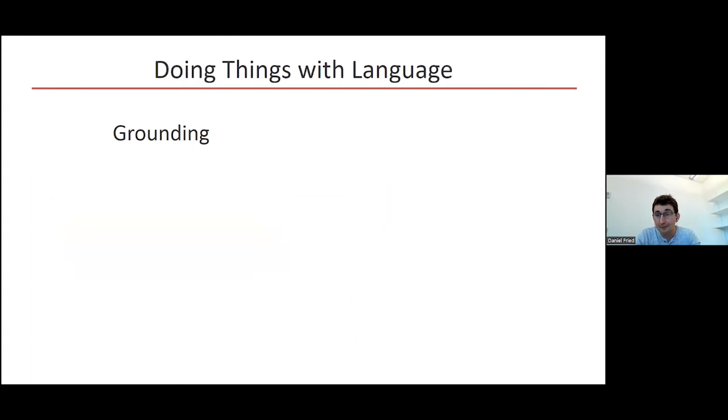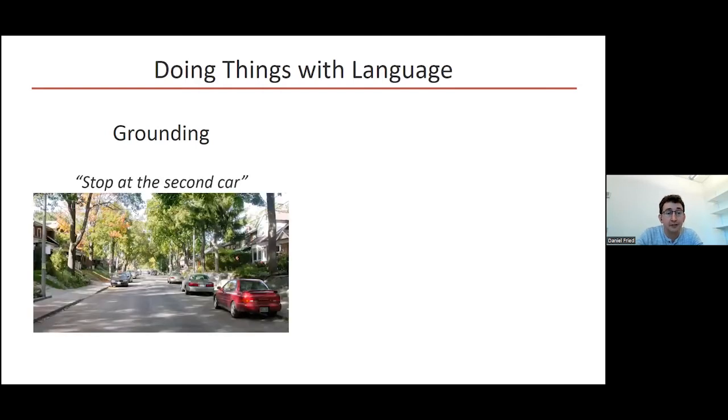Here's an example of both grounding and pragmatics. Grounding is about the literal meaning of language in the world. If someone says to you stop at the second car, you should figure out they're probably referring to this car here.